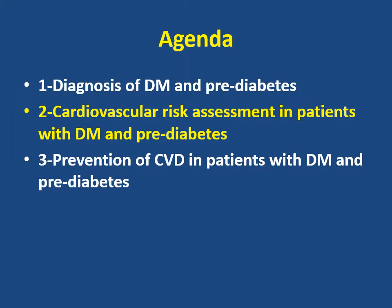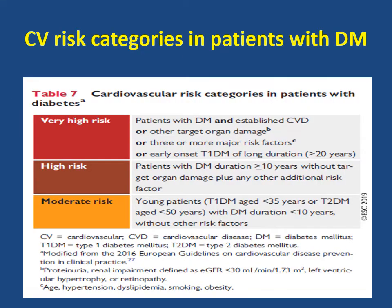Our second point is cardiovascular risk assessment in patients with diabetes and pre-diabetes. We have three risk categories. The first category is the very high risk category, which includes patients with diabetes and established cardiovascular disease such as cerebrovascular disease, coronary artery disease, or peripheral arterial disease; patients with diabetes and other target organ damage such as nephropathy or retinopathy; diabetes with three or more major risk factors such as hypertension, dyslipidemia, or obesity; or early onset of type 1 diabetes with longer duration more than 20 years.